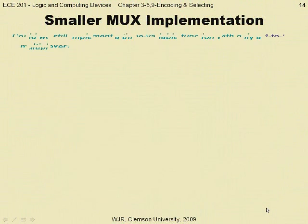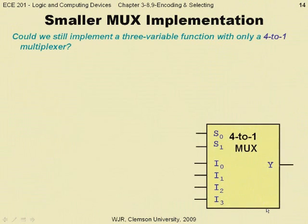I now ask: could we still implement this same function f if we only had a 4-to-1 mux? That is, can we implement any three-variable function with a mux with only two select lines?